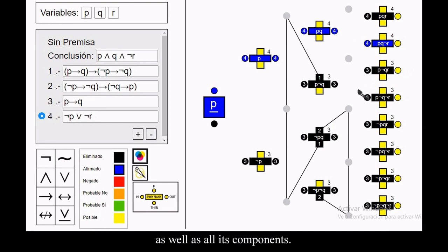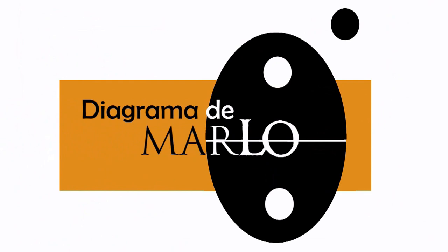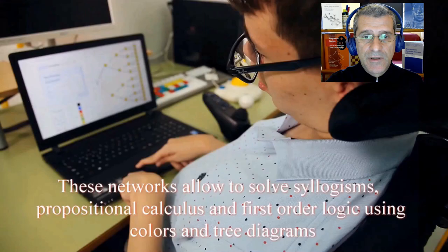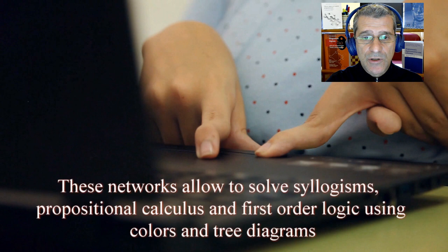The expectation networks are included in the doctoral thesis Marlowe's logic diagrams for visual and heterogeneous reasoning. These networks operate with colors and tree diagrams. The nets are intuitive for students who perfectly see the conclusions using colors.